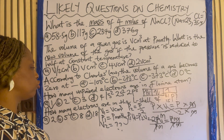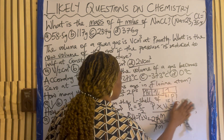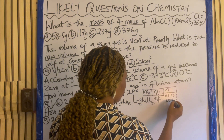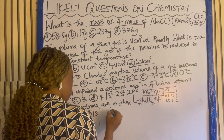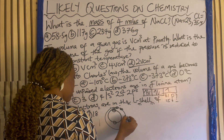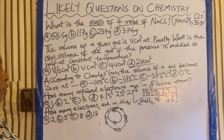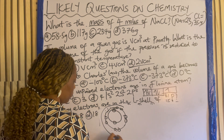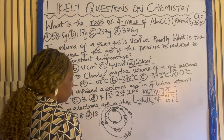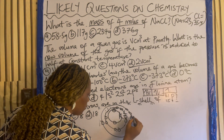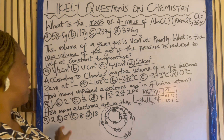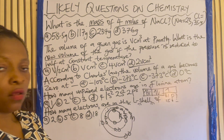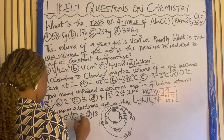How many electrons are in the L shell of phosphorus (atomic number 15)? Draw out the shells: K gets 2 electrons, L gets 8 electrons (maximum), and M gets the remaining 5. Phosphorus: 2, 8, 5. So L shell has 8 electrons. The answer is C.